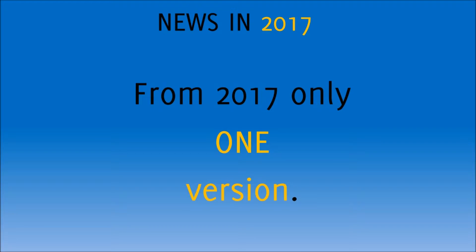The biggest news for 2017 is, of course, that there will be only one Paper A. Just to remind you, up to now there existed two Paper A versions — one for chemists and one for mechanics. And in the past, they have been quite different in the way they were drafted, and I think sometimes even in their difficulty.